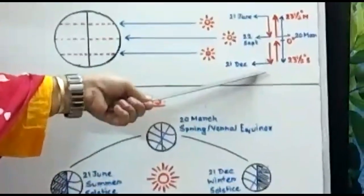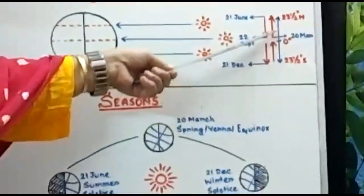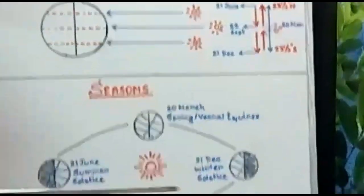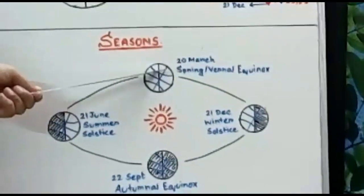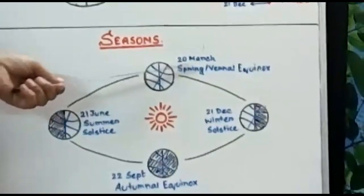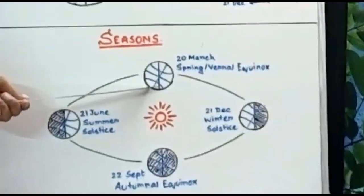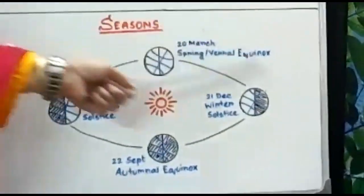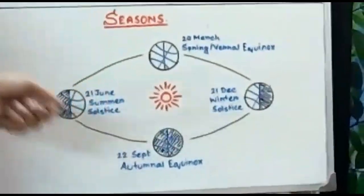After 21st December, the sun comes towards the equator and reaches it on 20th March. On 20th March, the northern hemisphere is having spring and the southern hemisphere is having autumn. That is the seasonal change which happens due to revolution.